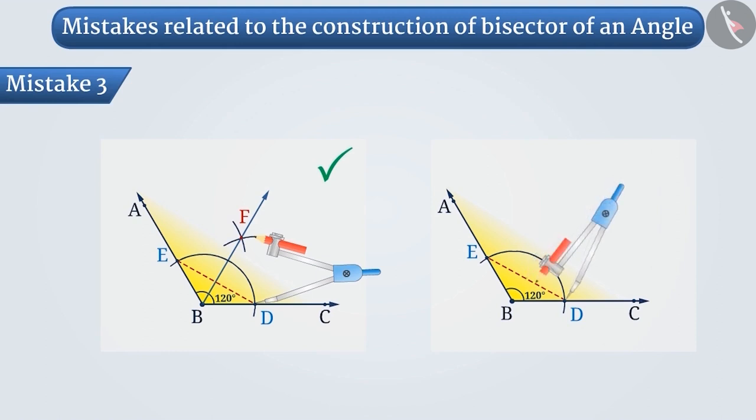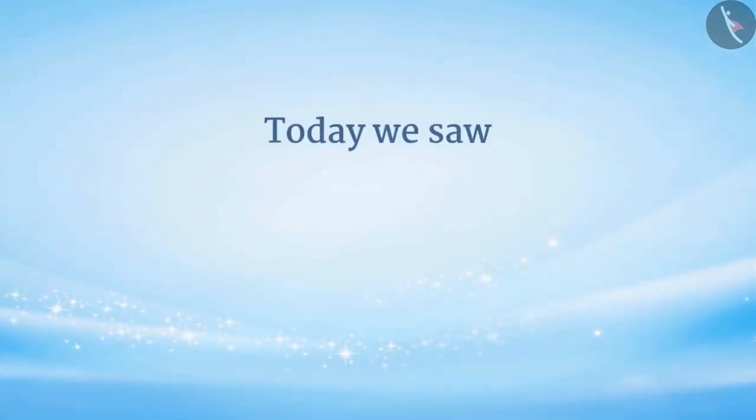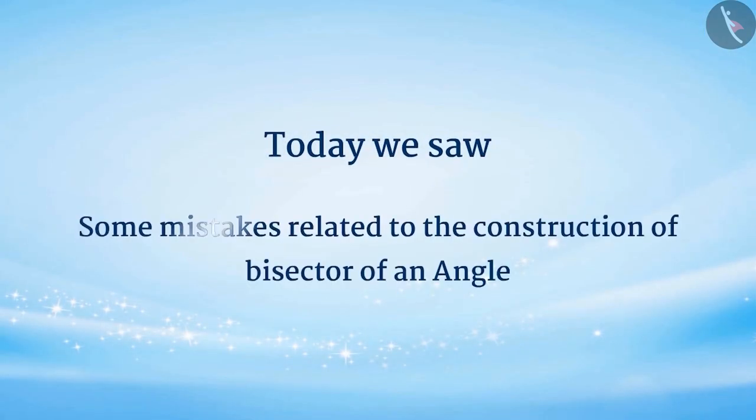If the distance is kept less than half, the arcs will not intersect. So, today we saw some mistakes related to the construction of bisector of an angle.